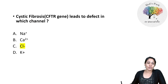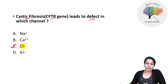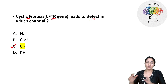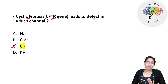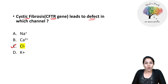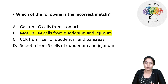In cystic fibrosis, which channel defect is present? We all know it is the chloride channel defect. Some said a long case scenario was given with the CFTR gene mentioned — but whether asking about CFTR gene or cystic fibrosis, both point to the same answer: chloride.